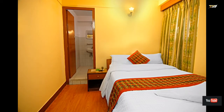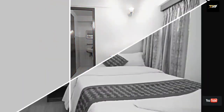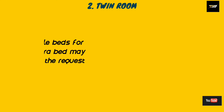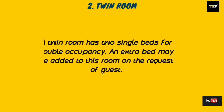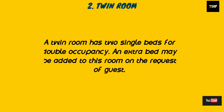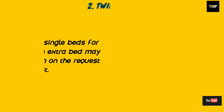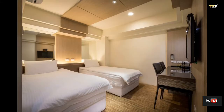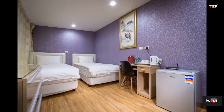The next one is the twin room. A twin room has two single beds for double occupancy. An extra bed may be added to this room on the request of a guest and charged accordingly. The bed size is normally three feet by six feet. These rooms are suitable for sharing accommodation among a group or for forum meetings.